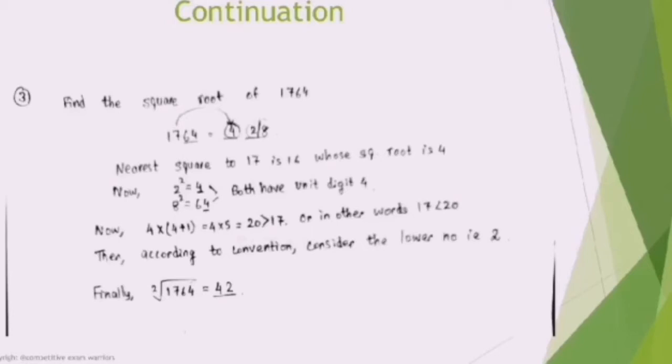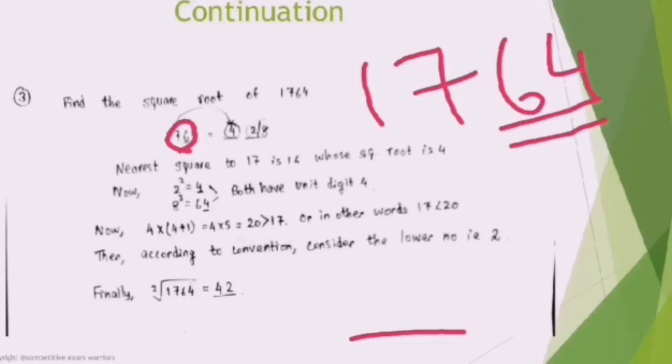First of all, let's concentrate on the tenth and unit digit, that is 64. For 1764, we'll be concentrating on the last two digits and deciding what will be the unit digit in the square root. It can be either 2 or 8.